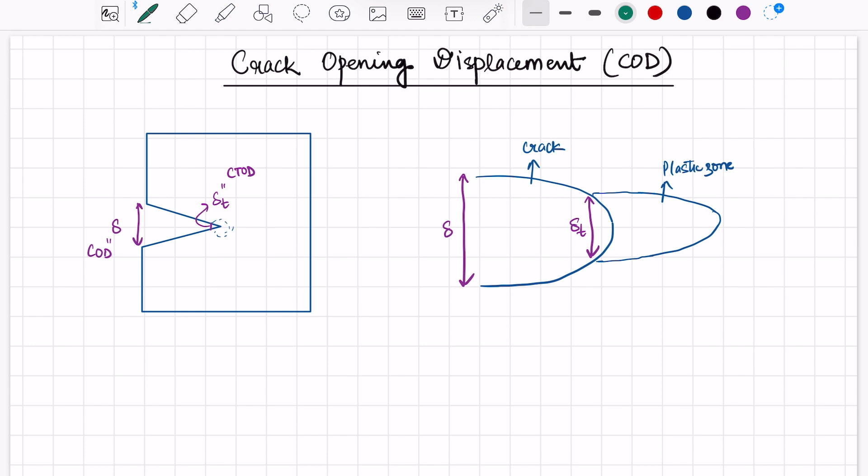The crack opening displacement model was proposed to determine the fracture toughness of elastic-plastic materials. Here, del is crack opening displacement and del_t is crack tip opening displacement. In this model, it was proposed that the plastic zone is made up of several miniature-sized tensile specimens, and crack growth occurs by fracturing these specimens.